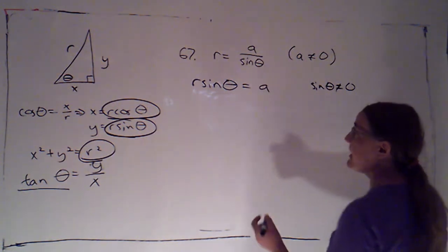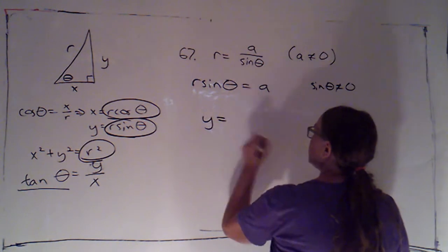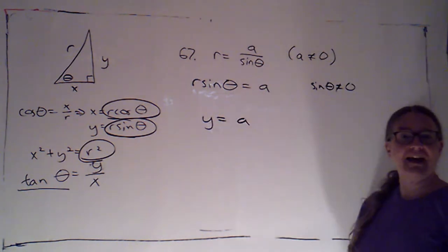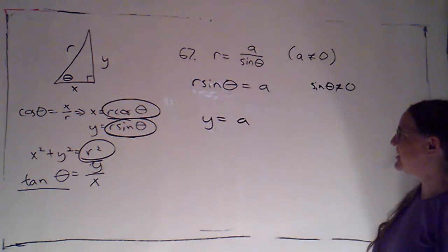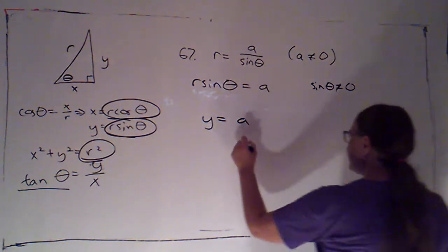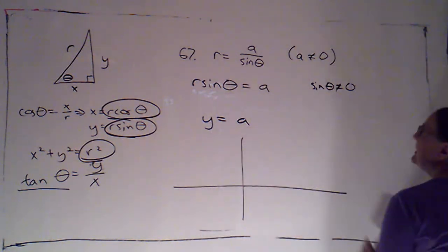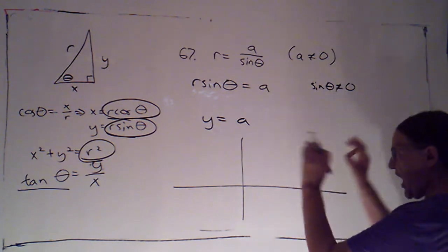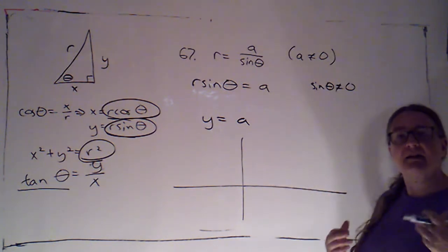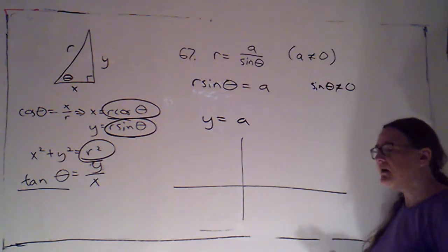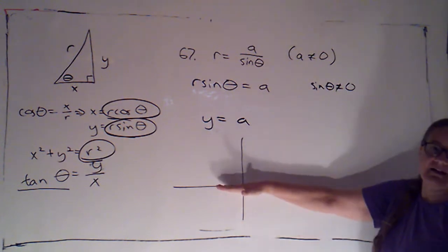But that's great, because r sine theta is just y. So y is equal to a. I like it. Now, notice, one thing that's kind of interesting about that, if a is not zero, but y is constant at a, that's going to give me a horizontal line that's not the x-axis.